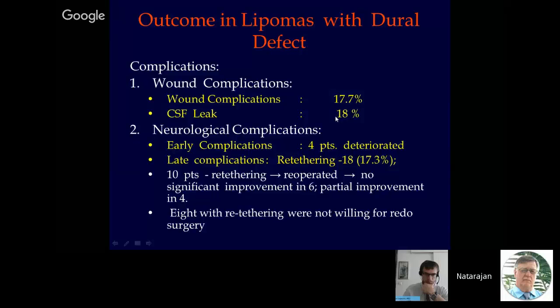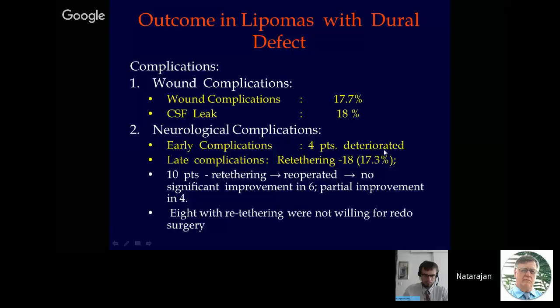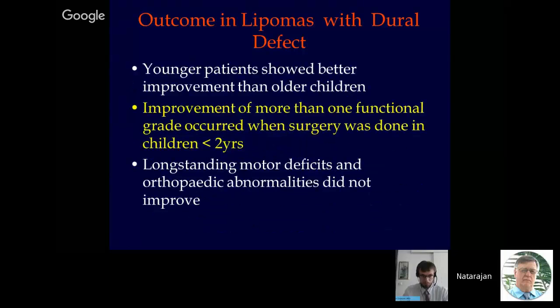As far as complications are concerned, four patients deteriorated. Fortunately, no patient became paraplegic, but root deficits were present in four of these patients. Regarding late complications, 18 patients presented with retethering. Only 10 patients were willing for redo surgery. Of those re-operated for retethering, there was no significant improvement in six and partial improvement in four, while eight patients were not willing for redo surgery. As far as outcome is concerned, younger patients showed better improvement than older children. Improvement of more than one Hoffman functional grade occurred only when the child was operated at a younger age. Long-standing motor deficits and orthopedic abnormalities did not improve, and we do not expect orthopedic abnormalities to improve with untethering surgery alone.